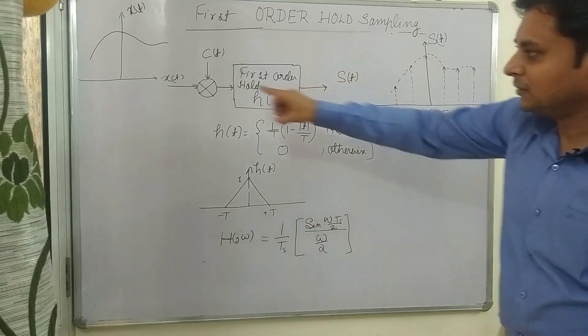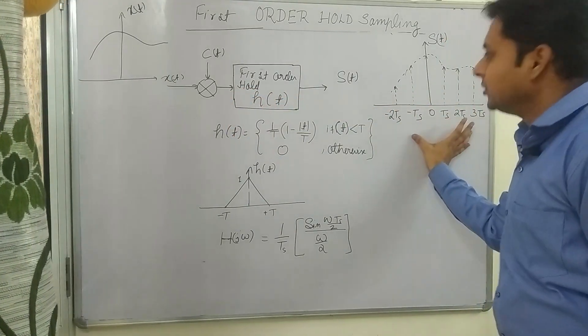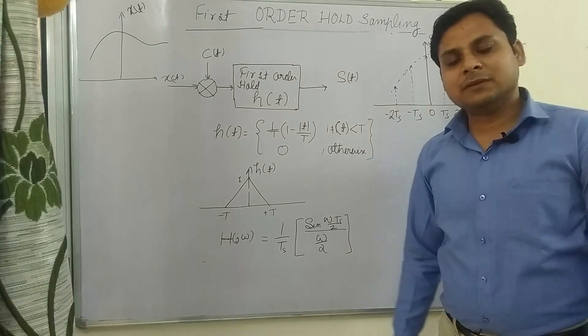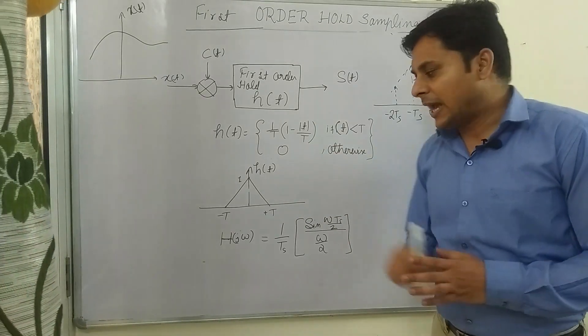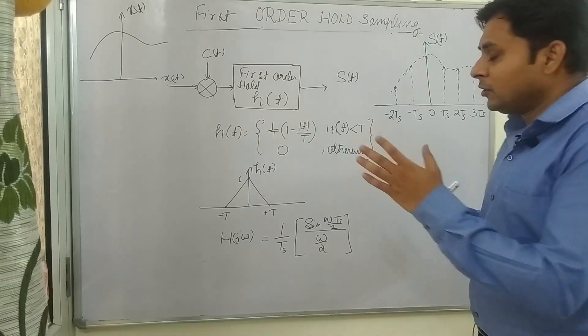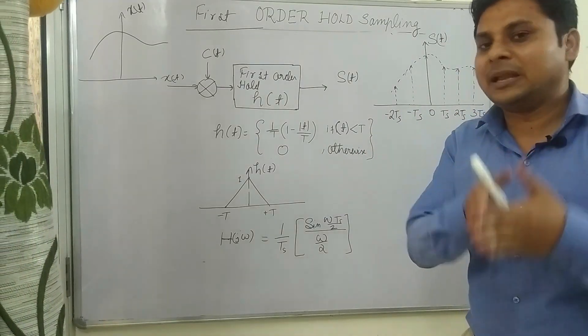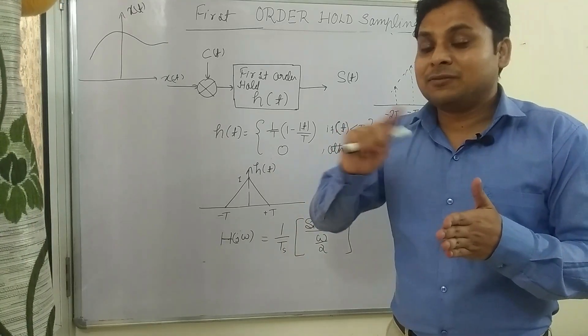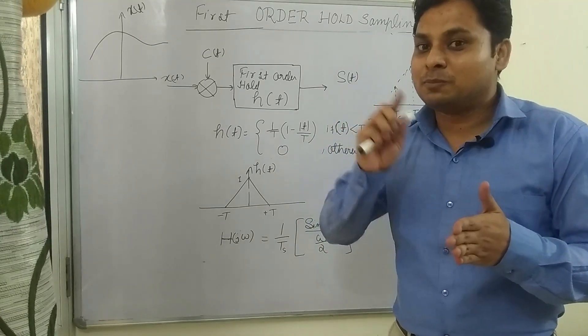Now what will happen when we convolve this function with h(t), this triangular pulse? When we convolve this function with h(t), it will not give a constant value from one sampling time period to another sampling time period. It will not give constant value but